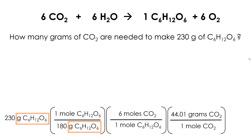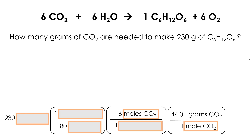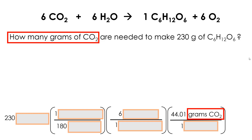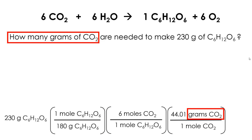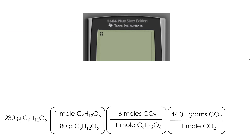Now I'm set. I started with grams of glucose, and grams of glucose is on the bottom of the next fraction — that has to happen. Then moles of glucose matched on the top and on the bottom. Then moles of carbon dioxide matched on the top and on the bottom. The only unmatched unit and chemical is grams of carbon dioxide, and that's what I want, because that's what the problem asks me about.